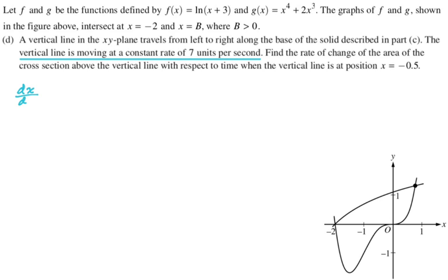So it's moving left to right at 7 units per second. That's like a dx/dt situation, right? Because a vertical line has equation x equals, I don't know, 10. That's a vertical line. It's moving. So dx/dt is 7.